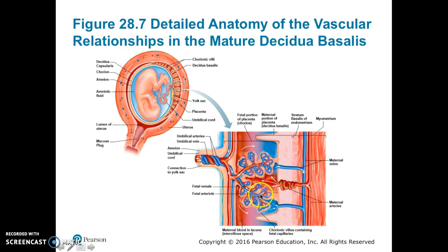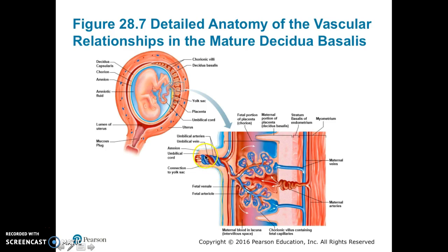The fetal artery takes nutrients and oxygen from the maternal side and passes them into the fetal blood, which then travels toward the fetus. The fetal vein returns and delivers waste products into the maternal blood, which exits via the maternal vein. This same exchange occurs in each chorionic villus — nutrients and oxygen enter via the fetal artery, and waste-laden blood returns and is delivered back to the maternal circulation.